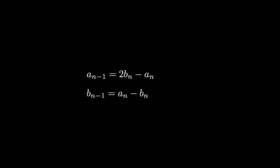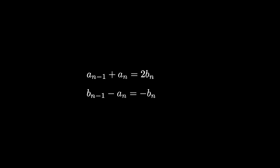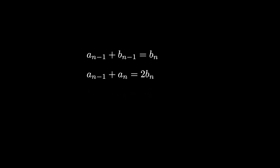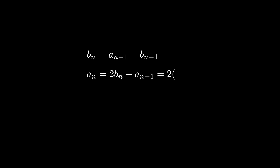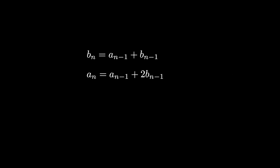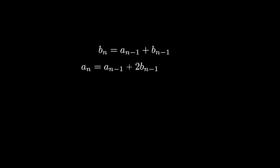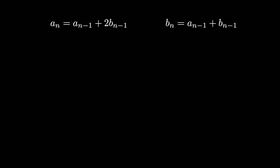We can use these two equations to solve for a_n and b_n. First, a_(n−1) + a_n = 2b_n, and b_(n−1) − a_n = −b_n. When we add these two equations together, we see that b_n = a_(n−1) + b_(n−1). Now, using the fact that a_n = 2b_n − a_(n−1), and substituting in our equality for b_n, we find that a_n = 2(a_(n−1) + b_(n−1)) − a_(n−1), which simplifies to a_n = a_(n−1) + 2b_(n−1). So these two recurrences allow us to build two infinite integer sequences a_n and b_n.